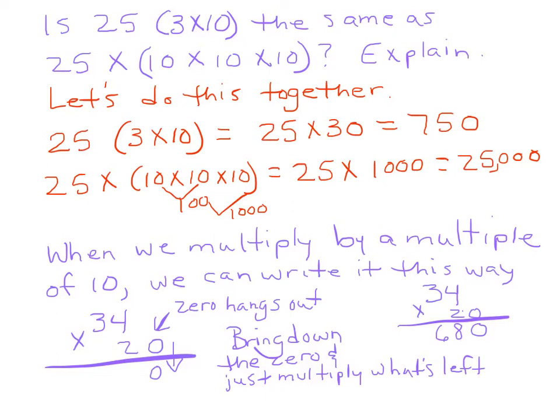So, is 25, and then this would mean times 3 times 10 the same as 25 times 10 times 10? Let's find out. So 25 times 3 times 10 is 25 times 30, as we have already done, it's 750. But 25 times 10 times 10 times 10, well, 10 times 10 is 100, 100 times 10 is 1000. Yeah, that's not going to work. So the answer is no. It is not the same. So be careful with what you're doing. Know what you're doing. 3 times 10 is not 10 times 10 times 10.